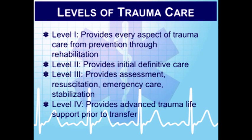Level three facilities have protocols to determine who needs to go to a higher facility. Level four facilities are found in more remote areas and provide advanced trauma life support prior to transfer to a higher level — this could be a clinic, urgent care facility, or a smaller hospital. Initially, all levels are expected to provide the same high quality care to the patient, regardless of their classification.